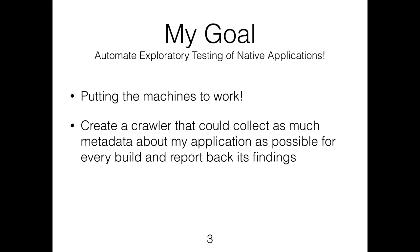My goal was to automate exploratory testing of native applications the best I possibly could, trying to come up with every possible scenario I would normally do if testing manually. I wanted to put the machines to work — create a crawler application to collect as much metadata about my application as possible and report back all its findings on every build produced. Something that could help fill these quality gaps in such shortened release times. I also wanted to know more about my application on every build and keep a history of it, so I could benchmark and query it later. And I want to capture all the elements on every view and know which elements have accessibility labels, which is important for our visually impaired users.